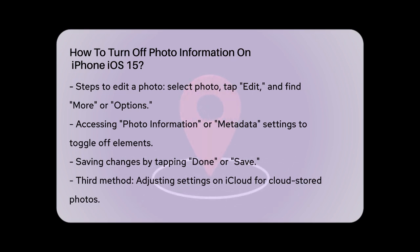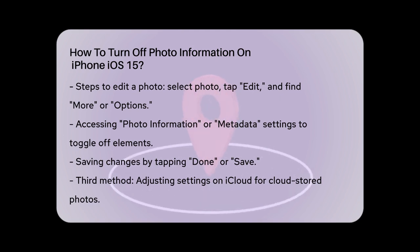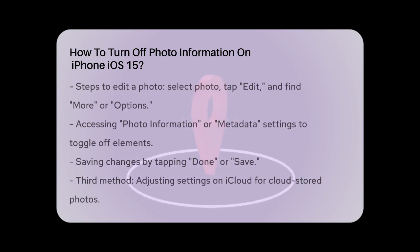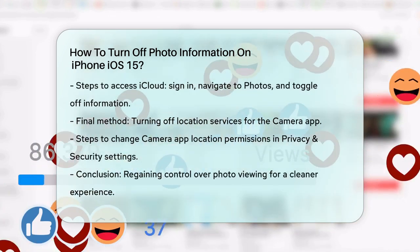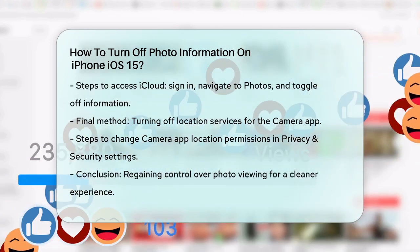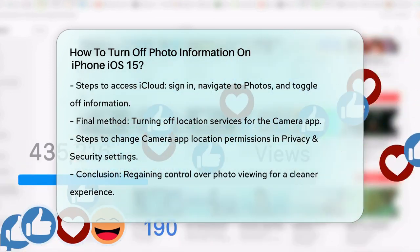If you store your photos on a cloud storage platform like iCloud, you can also turn off photo information through the platform's settings. For iCloud, go to the iCloud website on your computer, sign in with your Apple ID, and navigate to the Photos section. Select the photo you want to edit, look for the Information panel, and toggle off the elements you don't want to see. Save the changes, and when you access the photo on your iPhone, the information will be hidden.